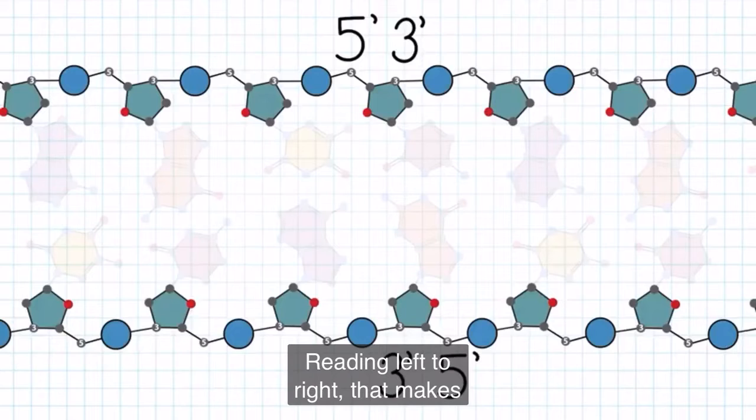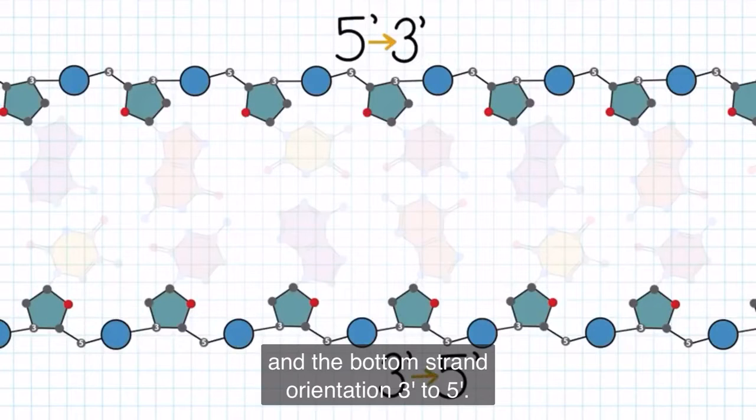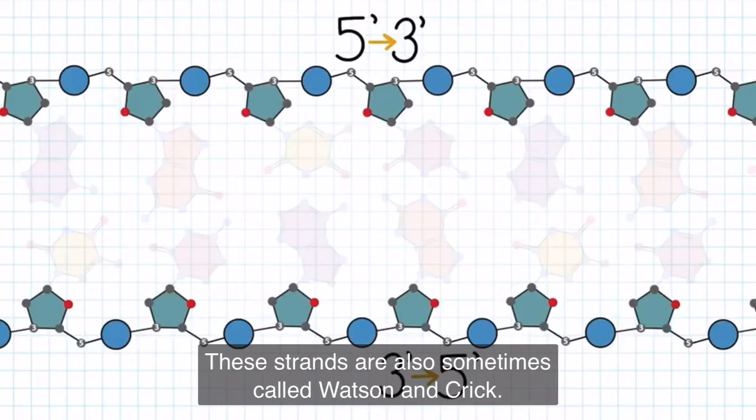Reading left to right, that makes the top strand orientation 5' to 3' and the bottom strand orientation 3' to 5'. These strands are also sometimes called Watson and Crick.